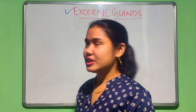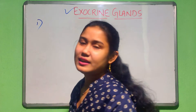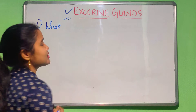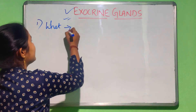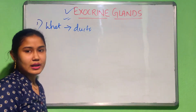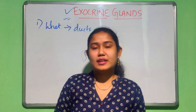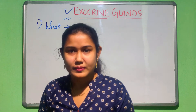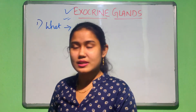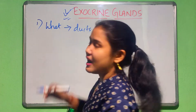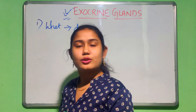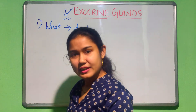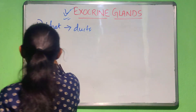First question: what are these exocrine glands? These are the glands which release their secretions into the ducts. The endocrine glands are ductless glands — they do not release their secretions into ducts. But these exocrine glands release their secretions into the ducts. So these are the glands with ducts.